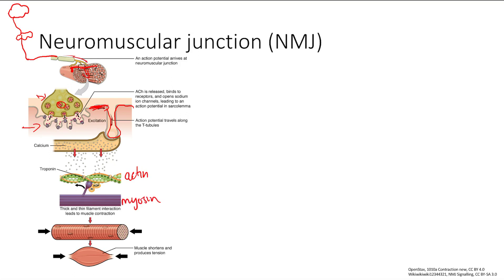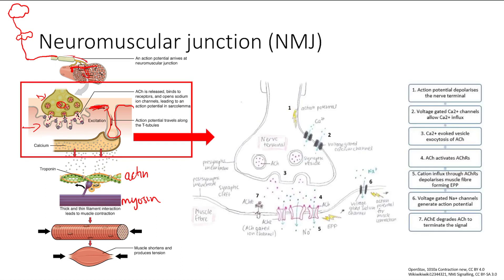Calcium is going to bind to the troponin, which is on actin. It's going to allow your myosin to bind and allow them to contract, and you're going to get muscle shortening and tension. But first, we're going to focus on the neuromuscular junction in more detail.